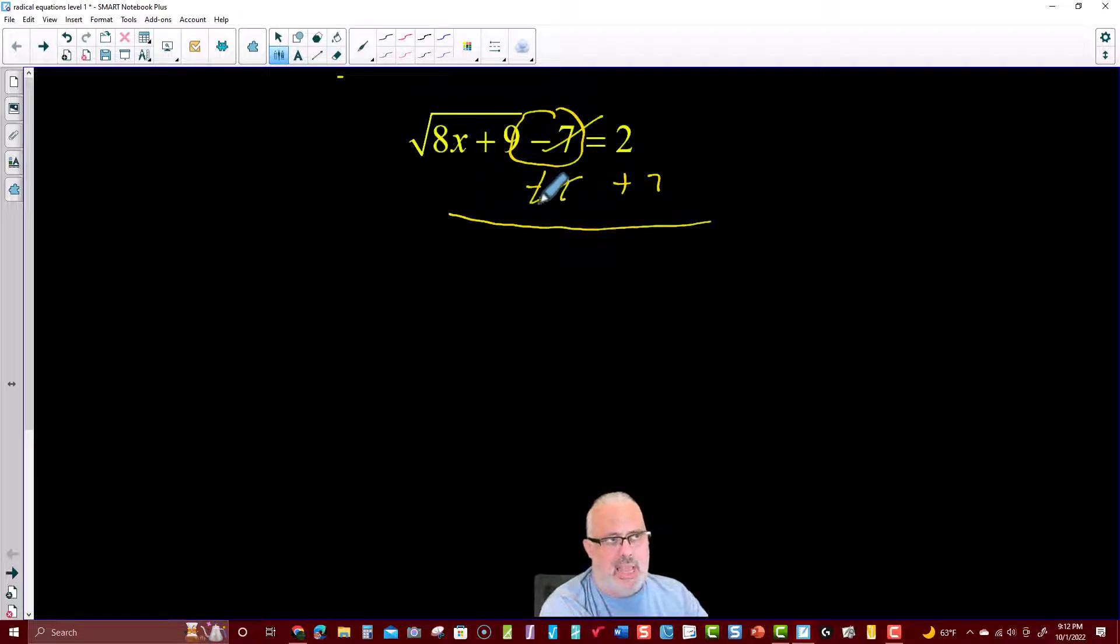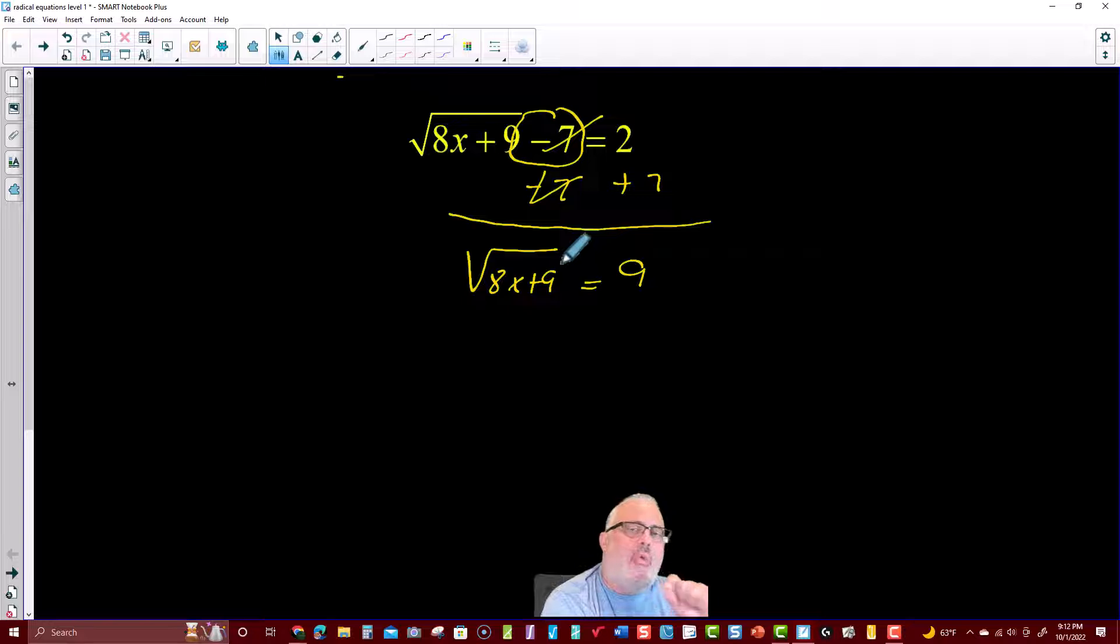So 7 minus 7 cancel each other out. So I have now the square root of 8x plus 9 equals 2 plus 7, which is 9. So this is the first step. And now we have the square root of 8x plus 9 equals 9.